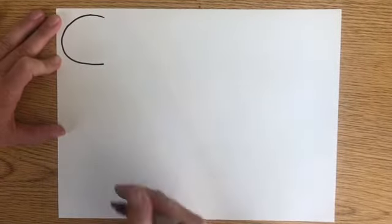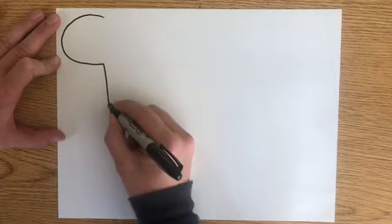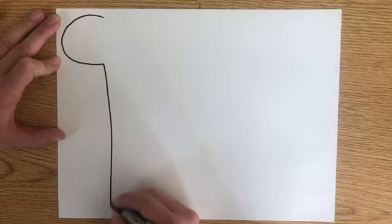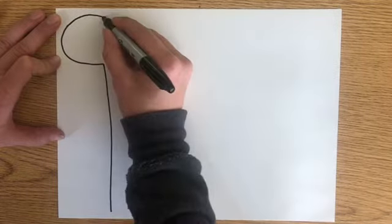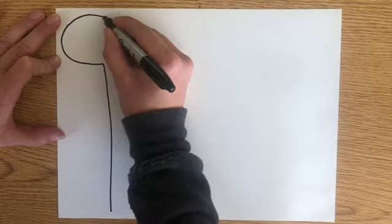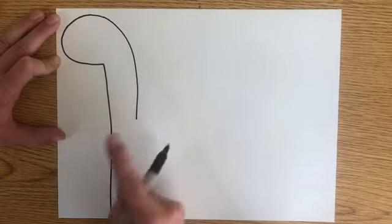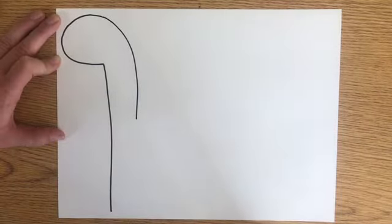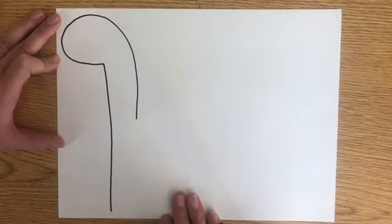When you have your letter C, go to the bottom portion of your C and make a line straight down almost to the bottom of your paper. Go back to your letter C, to the top of it, and make your line come out and then about halfway down that original line. This is the neck of our dinosaur.